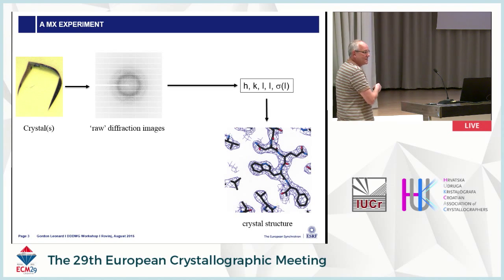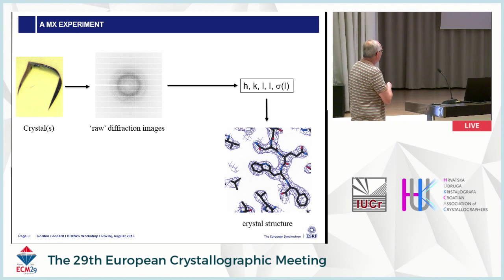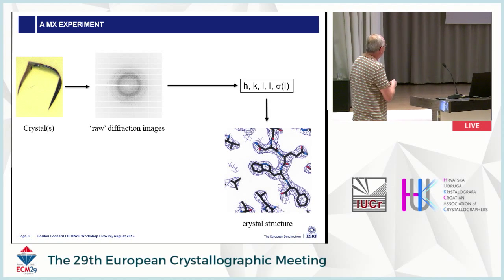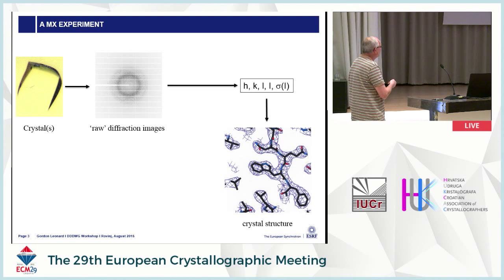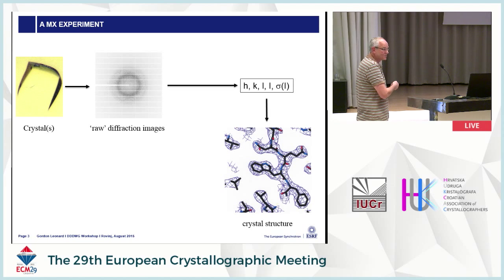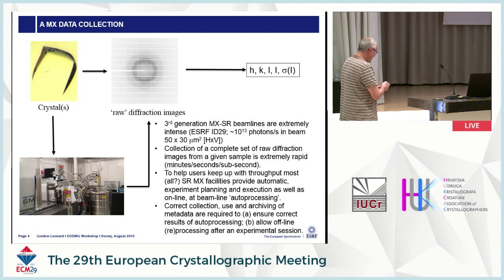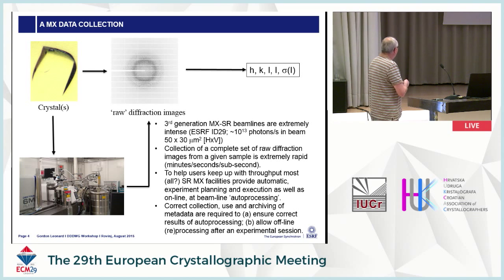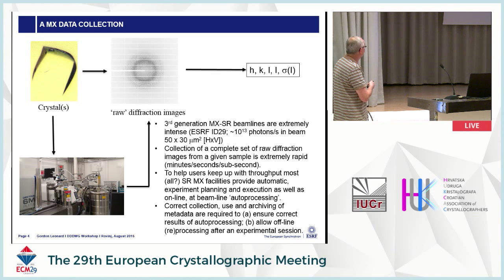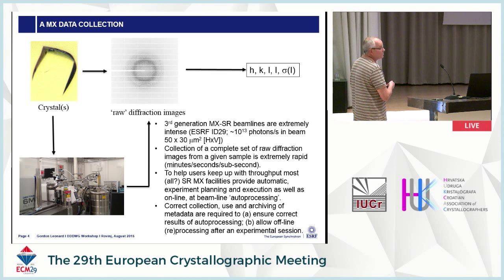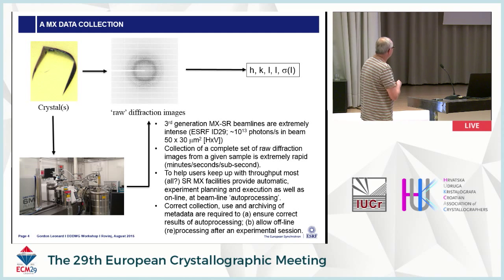We start with some crystals, we put them on a diffractometer or something, we collect some raw diffraction images, and we reduce these diffraction images to get the information we need to get our crystal structure. And as Harry Powell never forgets to tell us, the data collection step — from crystals to raw diffraction images — is the last and probably the most important step of an MX experiment.